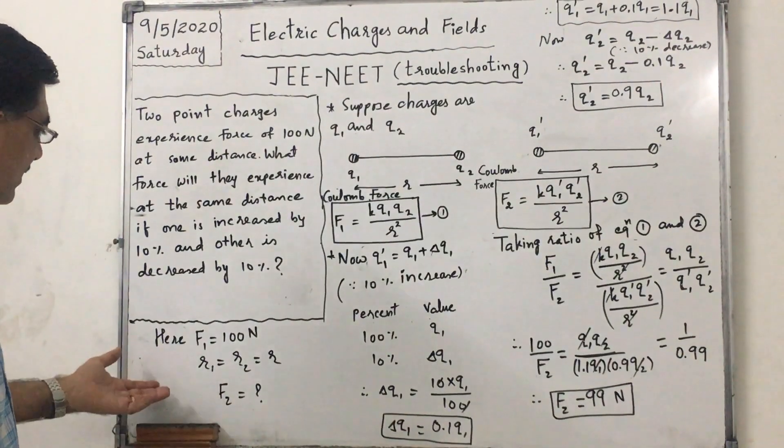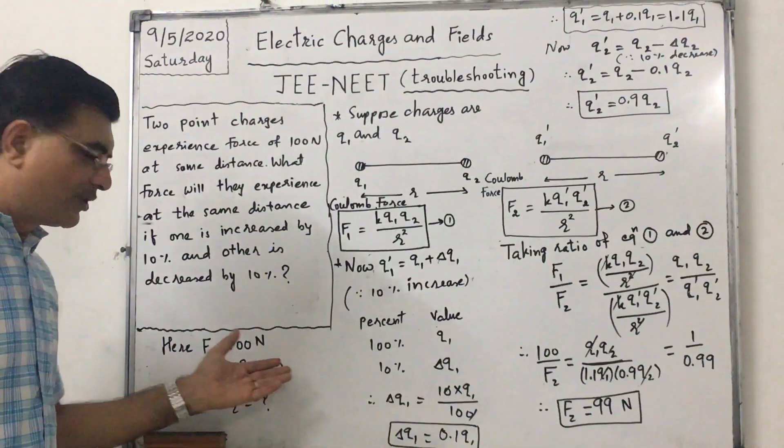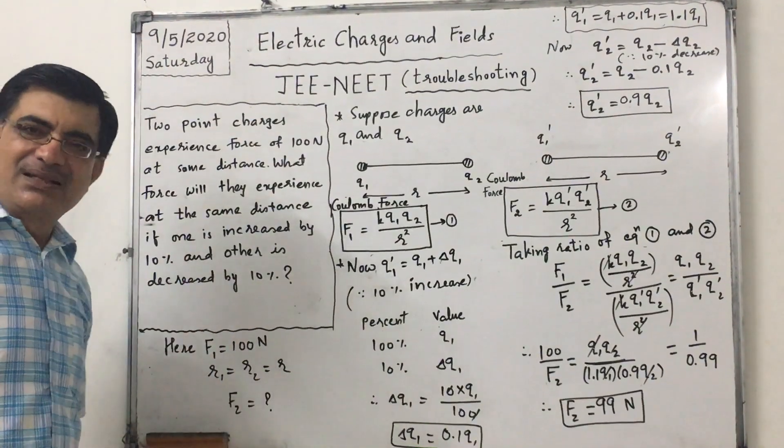Let us write the data. Initial force is 100 N. Distance is the same, so R1 equals R2 equals R. Final force we need to find.